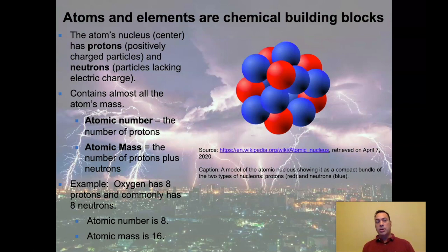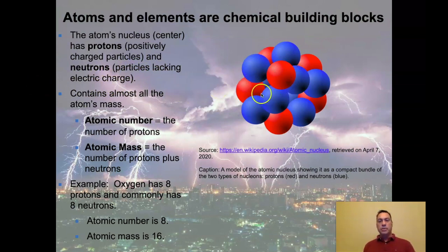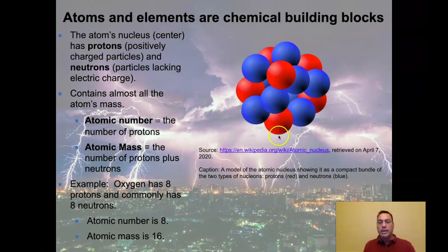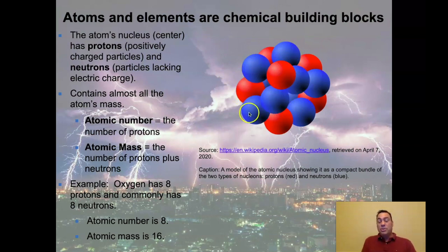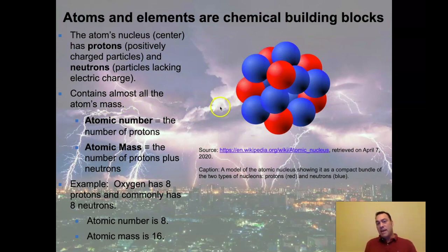An atom's nucleus is the center and contains two particles: protons and neutrons. Protons are positively charged particles and neutrons lack electric charge entirely — they're neutral. Looking at a nucleus, some particles are neutrons and some are protons; in this image protons are shown in red and neutrons in blue. The nucleus controls the atom's charge through the protons, since neutrons have no electric charge at all. The nucleus also contains almost all of the atom's mass — electrons have very little mass by comparison.